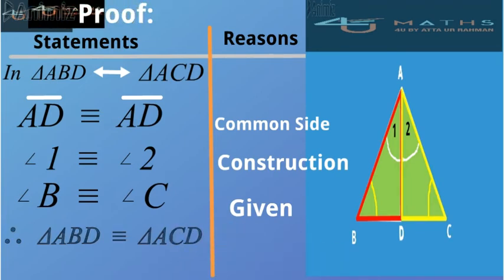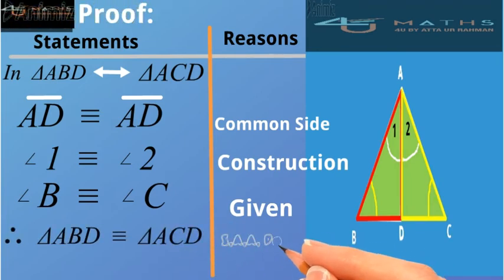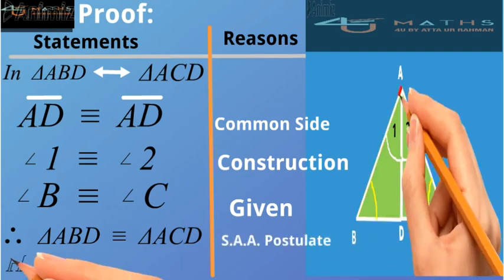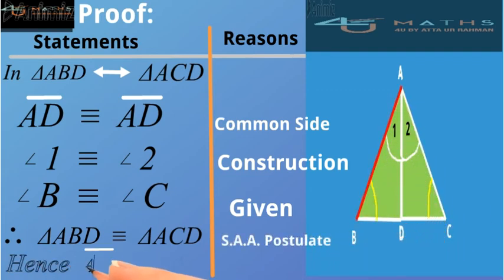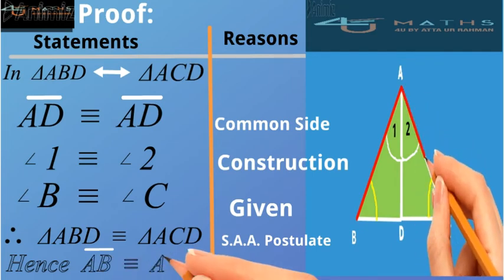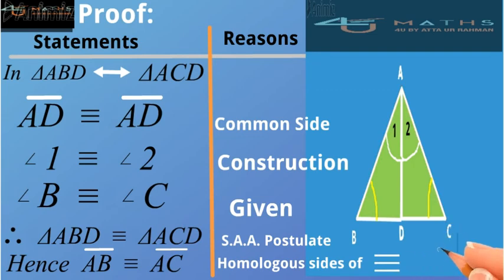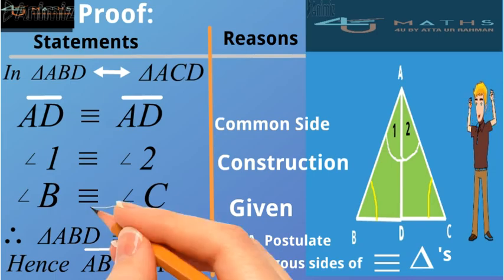By side angle angle postulate, hence side AB is congruent to side AC, because they are the homologous sides of congruent triangles ABD and ACD. And this is the proof of the theorem.